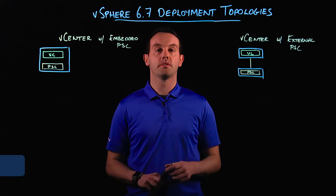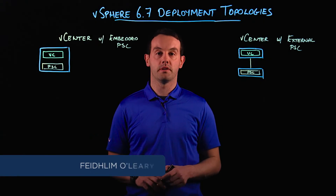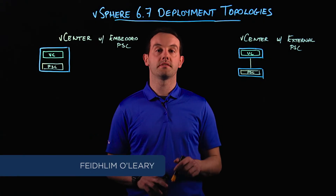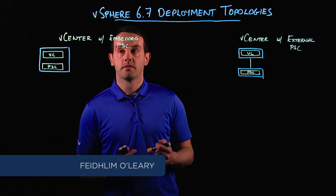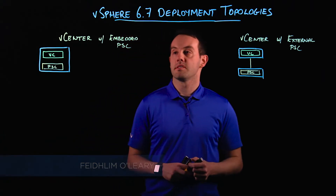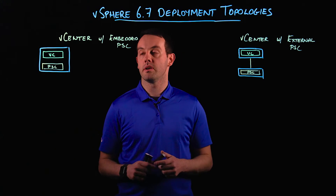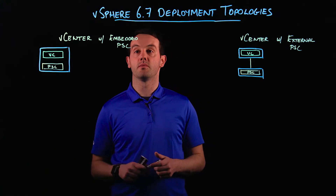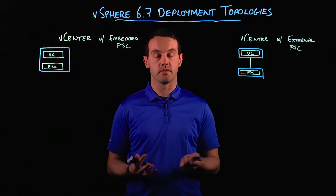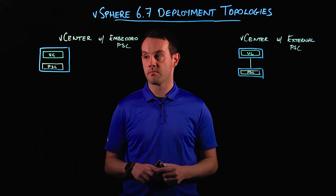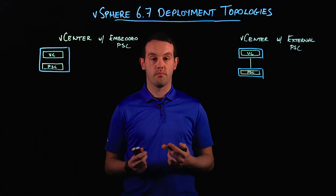In this video we're going to talk about the deployment topologies of vCenter Server 6.7. vCenter Server 6.7 has two deployment topologies: we can either do vCenter with an embedded PSC or vCenter with an external PSC. Let's discuss the features of both.